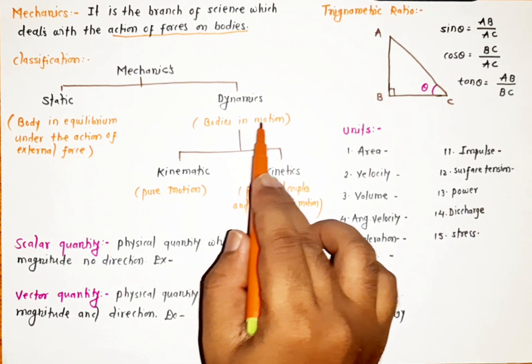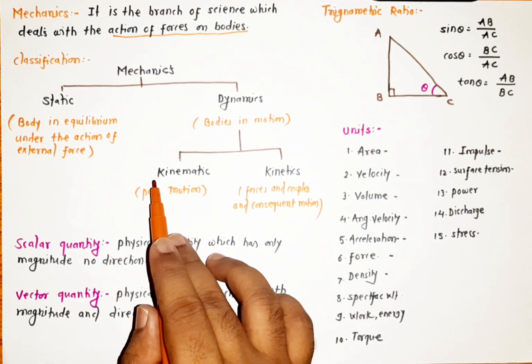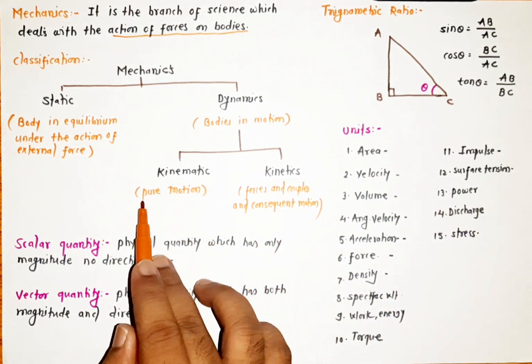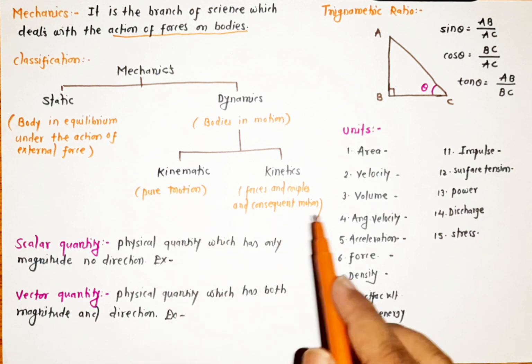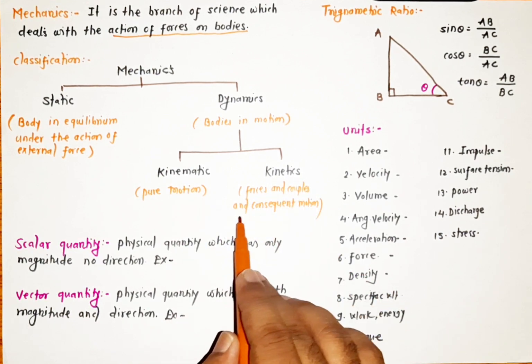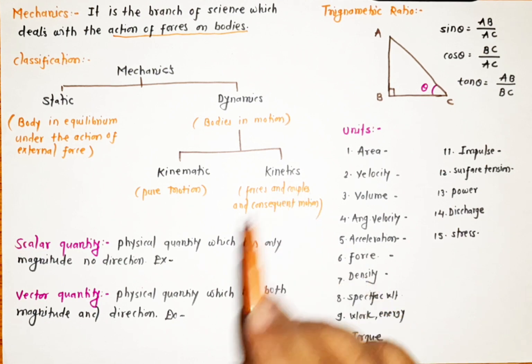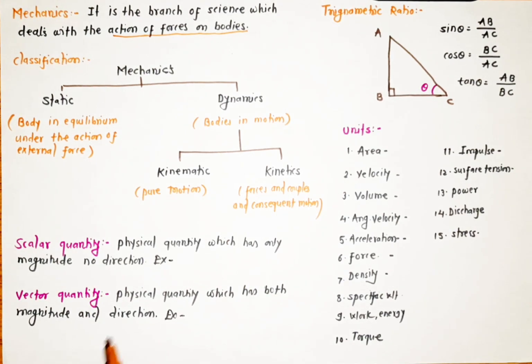This dynamics is divided into two classifications: one is kinematics and another is kinetics. Kinematics is pure motion, where the body will be in motion. Kinetics studies the forces and couples and the consequent motion of that particular body. So this is all about the classification of mechanics.